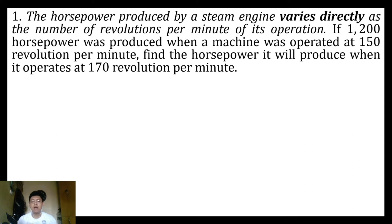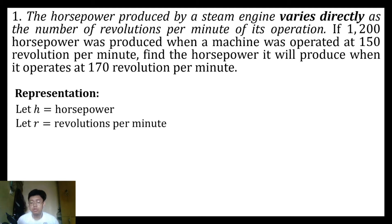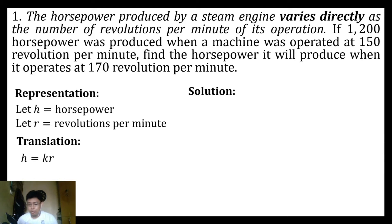First, we need to have our representation. The variables can be found in our first sentence. Let h be equal to the horsepower produced by a steam engine, and let r be equal to the revolutions per minute. Since we use the words 'varies directly,' we're going to deal with direct variation. Since the first variable mentioned is our dependent variable, we will have h is equal to k times r as our equation.